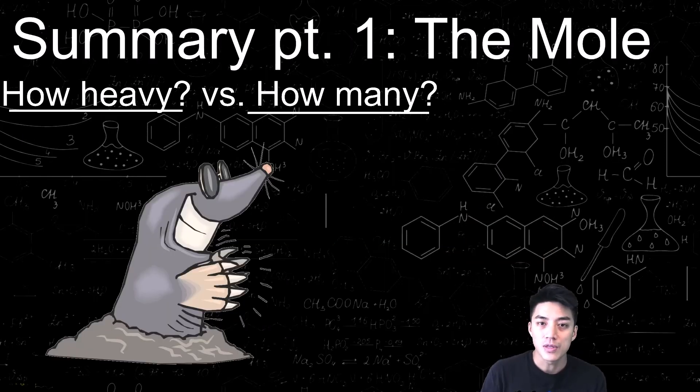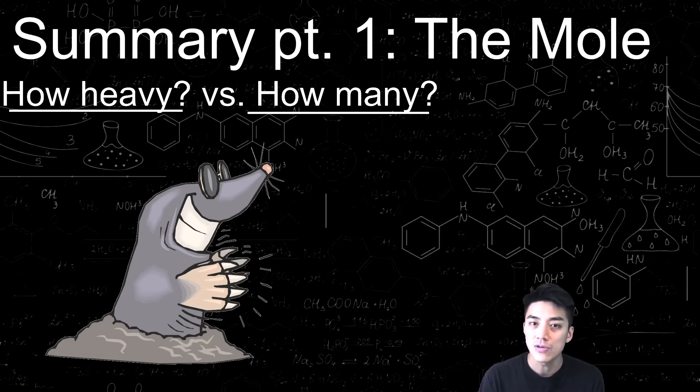So in short summary, the mole is just a really big number, and that number is 6.02 times 10 to the 23rd. Technically, you can have a mole of anything, but it is used in chemistry because atoms are so small, and there's so many of them, that you need a unit like the mole to help count or quantify the number of atoms that you have.